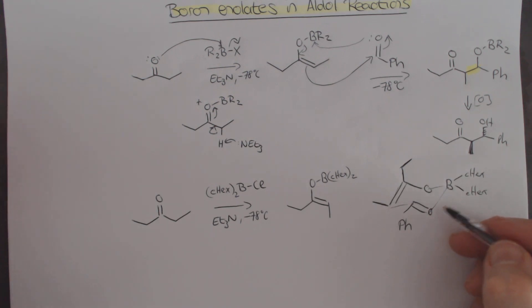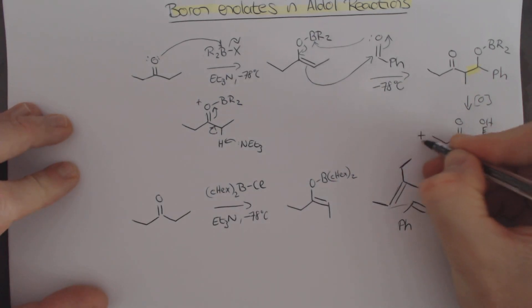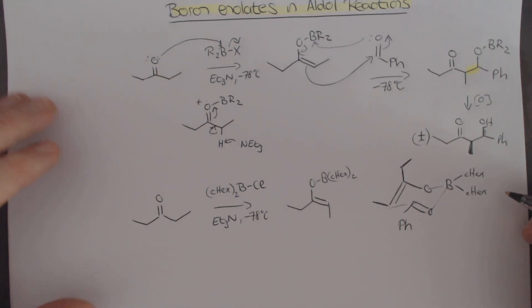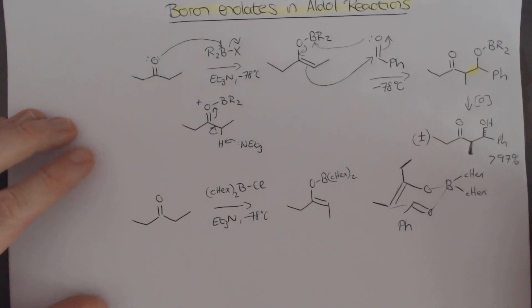But remember, of course, that this is just one of the enantiomeric transition states that we would see. There is the other one as well, so the product formed is racemic. But like I said, this is absolutely fantastic control, greater than 97% selectivity for the anti-stereoisomer. That's absolutely incredible.